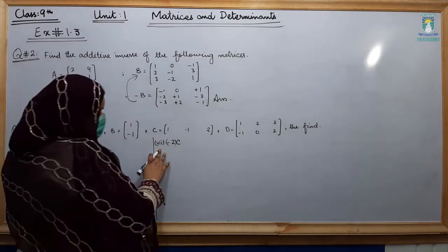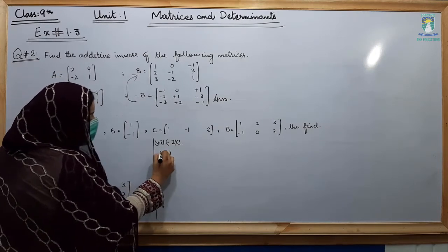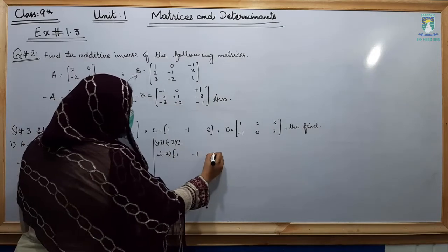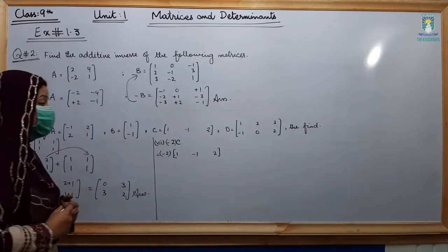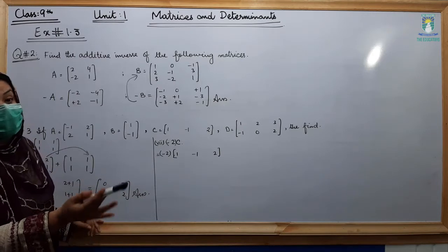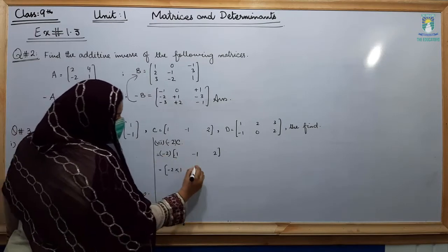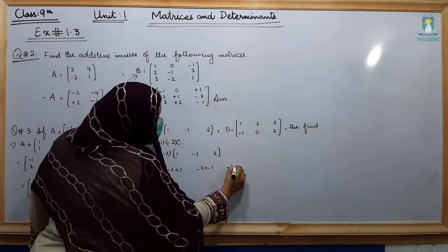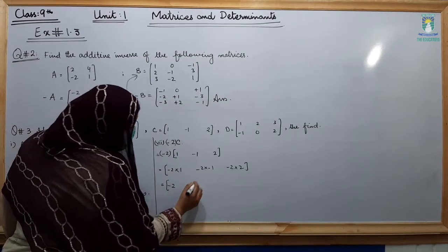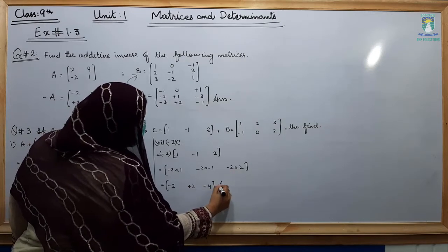Now students, in part number 7, we find minus 2 into C. We multiply minus 2 with matrix C, which is [1, minus 1; 2]. In scalar multiplication, any scalar quantity multiplied with a matrix multiplies with every entry of that matrix. So minus 2 times 1 is minus 2; minus 2 times minus 1 gives plus 2; minus 2 times 2 gives minus 4. This is your answer.